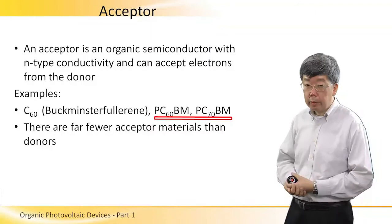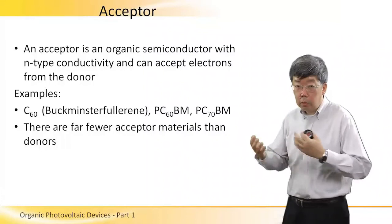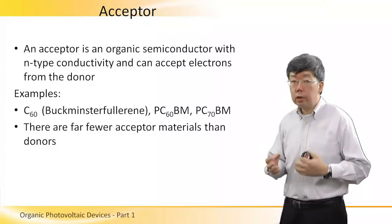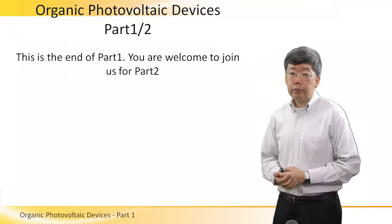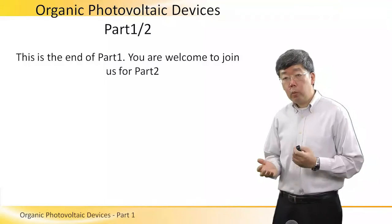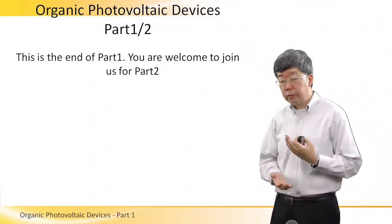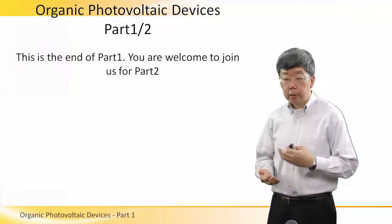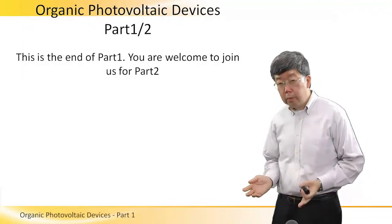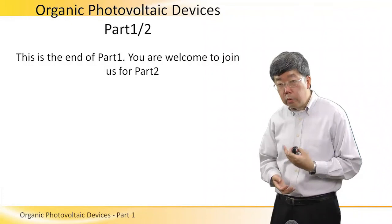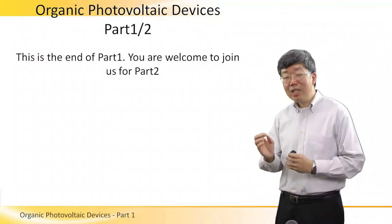Notice that there are far fewer acceptor or n-type materials than donors. This is because it is much more difficult to synthesize n-type materials than p-type materials. This brings us to the end of the first part of this tutorial, in which we have explained what thin-film photovoltaic devices are, and in particular organic PV devices. We have also explained the unique properties of OPV materials and introduced the two important types: the donor and the acceptor materials.